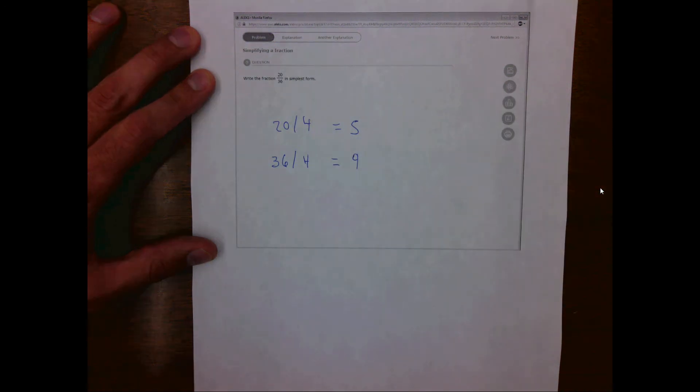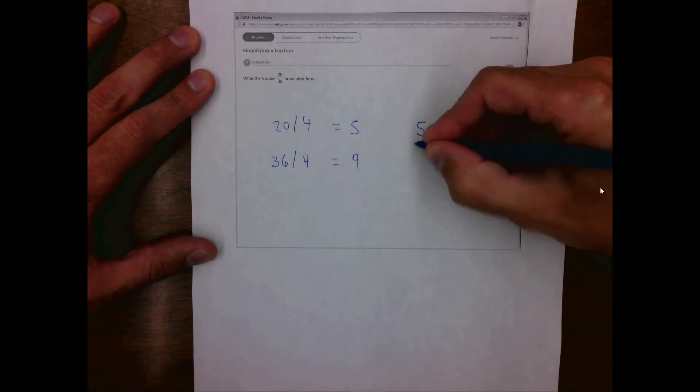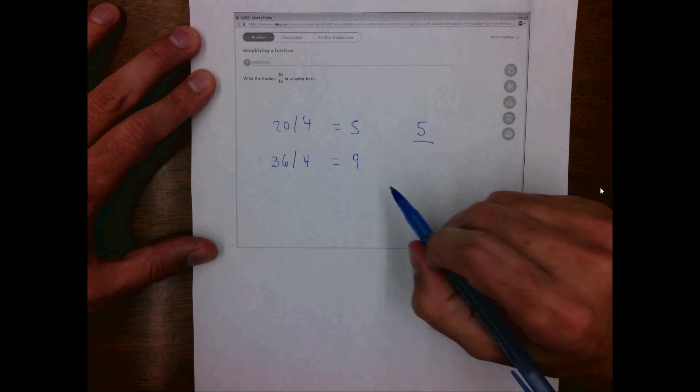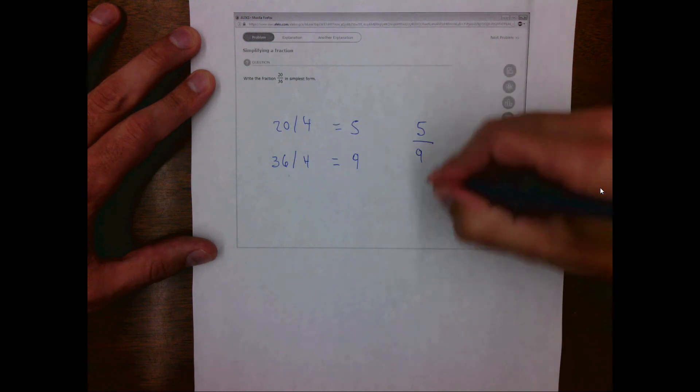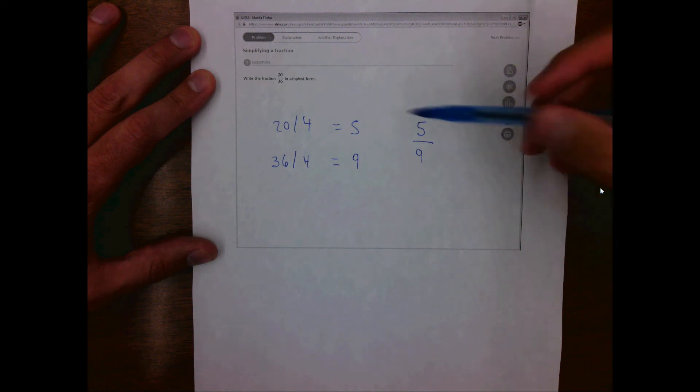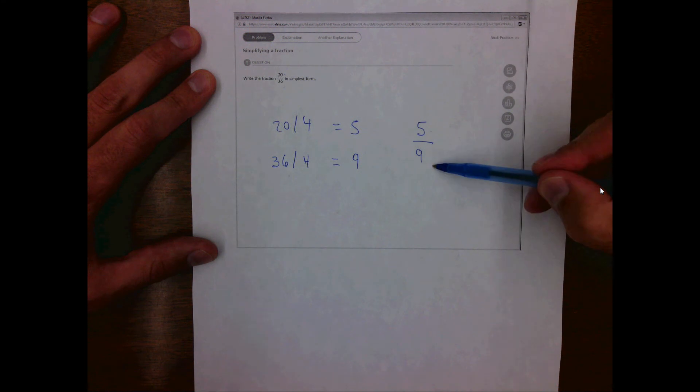Since 20 was on the top of the original fraction, we put 5 in the numerator. And since 36 was on the bottom of the original fraction, we put the 9 in the denominator. In this case, the simplest form of 20 divided by 36 is 5 ninths.